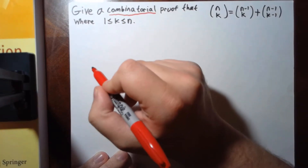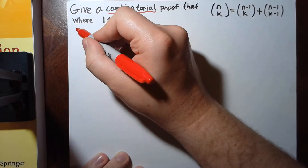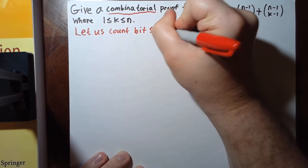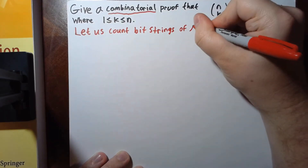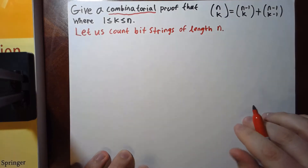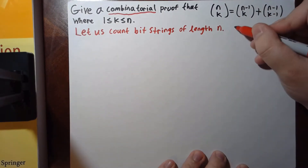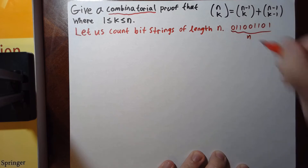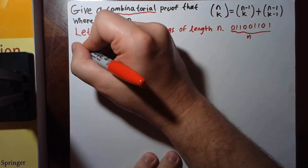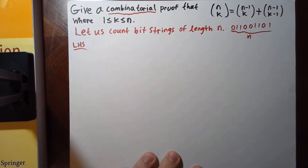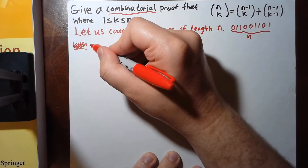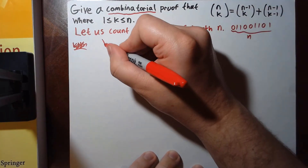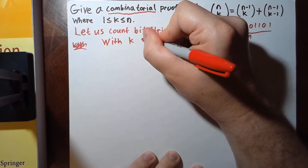The set I'm going to choose to count is bit strings of length n. Let us count the number of bit strings of length n with k ones. A bit string is just a bunch of zeros and ones — a binary string with n coordinates.